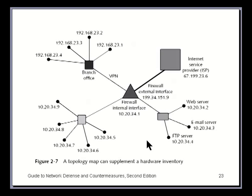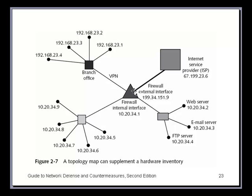This network topology map shows one network here, one here, and one here, going out to your internet service provider. There's a VPN between the branch offices. This area goes into your demilitarized zone. This appears to be a dual-homed host firewall with a network interface card on the outside and one going to the inside, which allows you to filter packets and determine where to forward them.